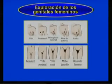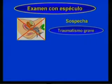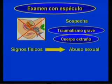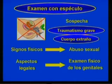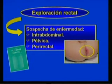Al igual que en el desarrollo mamario, se precisará la madurez sexual según los estadios de Tanner. El examen con espéculo en una niña prepúber no se realizará a menos que haya sospecha de un traumatismo grave o cuerpo extraño. Los signos físicos que sugieren o indican abuso sexual aparecen bien detallados en tu libro de texto. Les sugerimos que revisen los aspectos legales del examen físico de los genitales en el material complementario Historia Clínica Pediátrica. La exploración rectal no es parte del examen físico pediátrico de rutina, pero debe hacerse siempre que se sospeche una enfermedad intraabdominal, pélvica o perirectal.